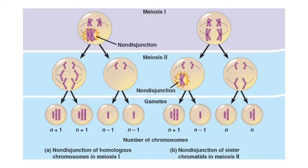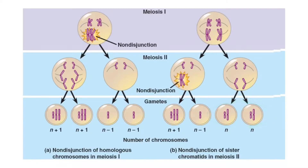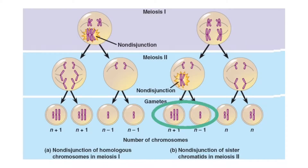Usually, an egg will go through two division processes and you'll end up with a normal number of chromosomes. As we become older, the chromosomes don't divide properly, and you end up with an abnormal number of chromosomes in the egg. If the egg were to fertilize, you end up with no pregnancy, miscarriage, or genetically abnormal offspring such as Down syndrome.